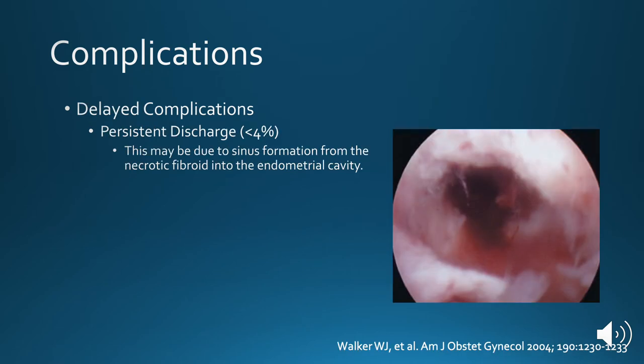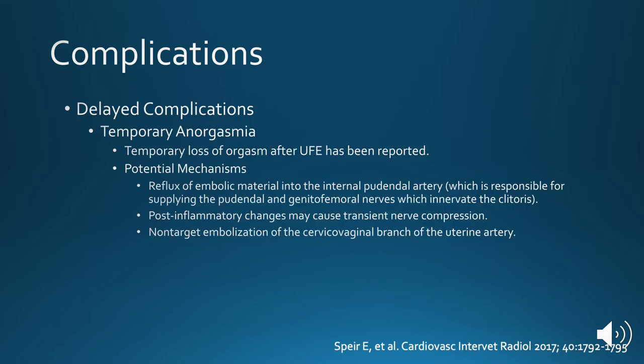In terms of delayed complications, persistent discharges can occur in less than 4% of patients. This may be due to a sinus formation from the necrotic fibroid into the endometrial cavity, which is seen here on this hysteroscopic image. Sexual dysfunction has been reported as well, including a temporary loss of orgasm after this procedure.